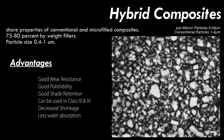Hybrid resin composites combine conventional and micro-fill technology and can be used in situations such as Class III and Class IV restorations. They contain a blend of 0.04-micron particles and small particles ranging from 1 to 4 microns. This combination allows the highest level of filler loading among resin composites and a relative improvement in physical properties. They can be polished, but not as lustrous as micro-fill composites, and the high filler content improves resistance to internal discoloration.